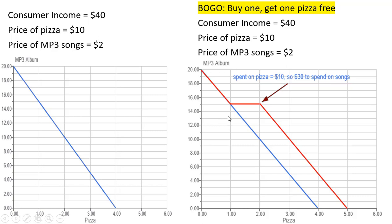On the other hand, if we buy one pizza we're going to get one free, so we don't have to spend any money on the second. At this point, with the BOGO offer, we spent $10 on pizza and get two pizzas since the second one is free. That means we have $30 left — we started with $40, spent $10 on pizza, leaving $30 to buy MP3 songs. 30 divided by 2 is 15, so that point corresponds to 15 songs on the vertical axis.